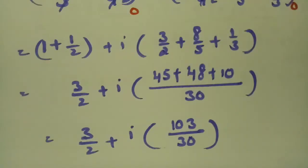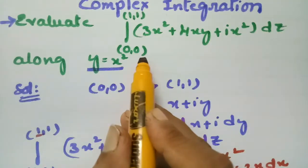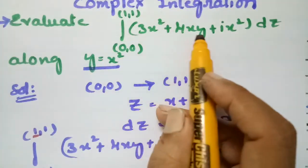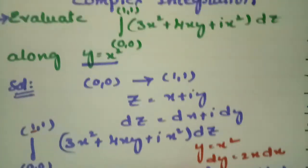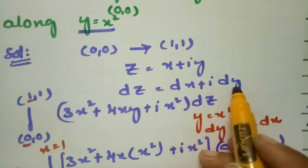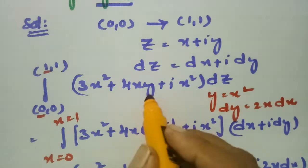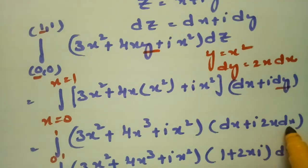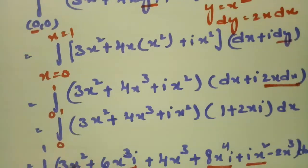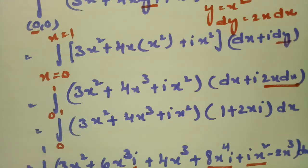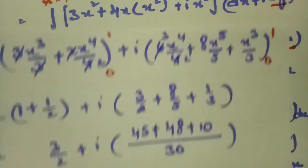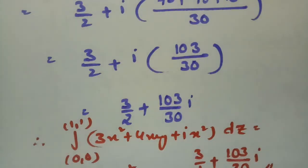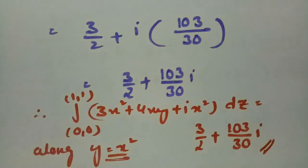To summarize: the integral is from (0,0) to (1,1) evaluating 3x² + 4xy + i·x² dz. Since z = x + iy, dz = dx + i dy. We substituted y = x² and dy = 2x dx, transforming everything to a single integral in x from 0 to 1, and obtained the final result 3/2 + (103/30)i. This is simple if you follow these steps — you can solve any problem of this kind. Please go through this video and share it with your friends. Thank you.